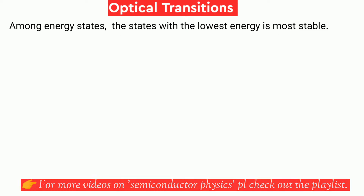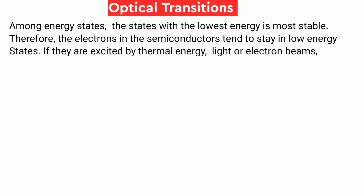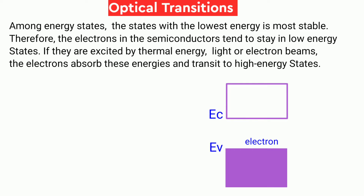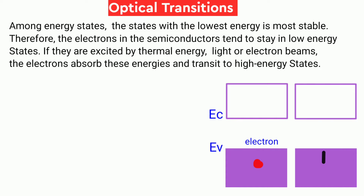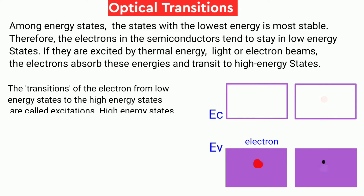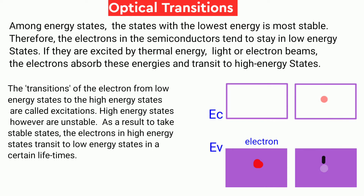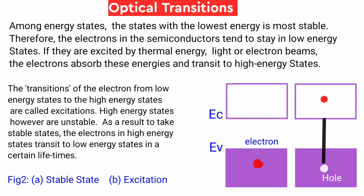Optical transitions occur among energy states. The lowest energy state is the most stable, so electrons tend to stay in low energy states. When excited by thermal energy, light, or electron beams, electrons absorb energy and move to high energy states. These transitions from low energy states to high energy states are called excitations. High energy states, however, are unstable.